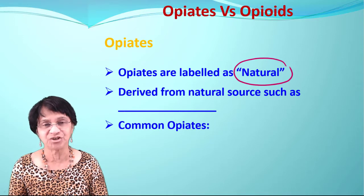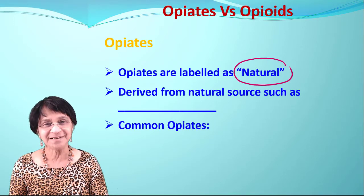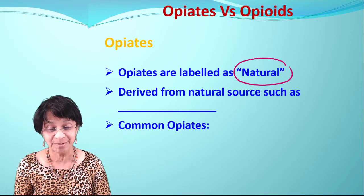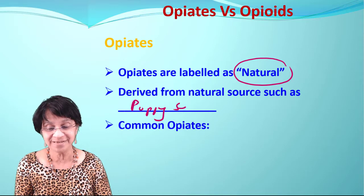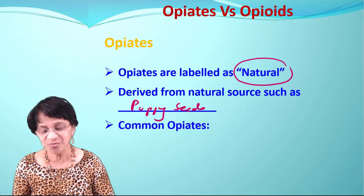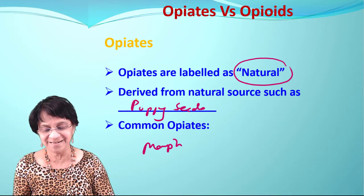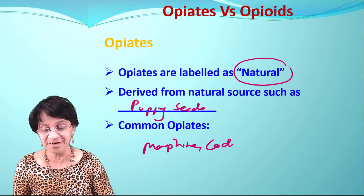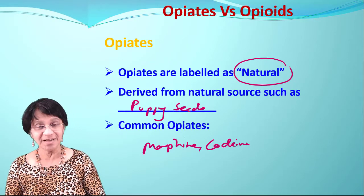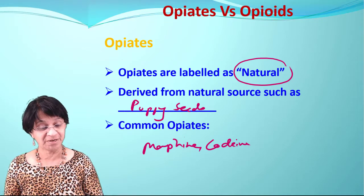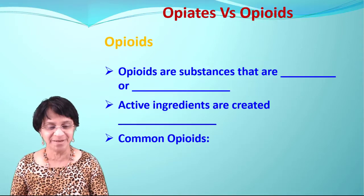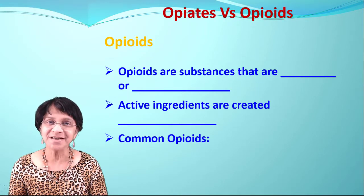Opiates — simple, easy definition: they are all natural. They are obtained from a natural source, such as morphine, which we get from poppy seeds. Common opiates include morphine and codeine. I would not add diamorphine or heroin here because that is not completely natural — we'll talk about that in a minute.